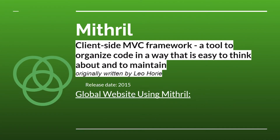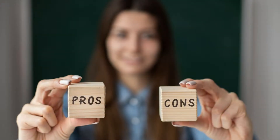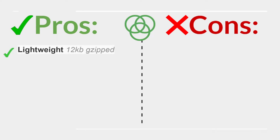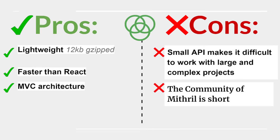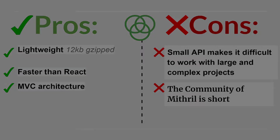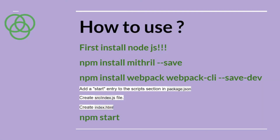Mithril is a client-side MVC framework — a tool to organize code in a way that is easy to think about and maintain. Originally written by Leo Harry, released in 2015. Used by Nike. Pros: lightweight at 12 kilobytes, faster than React, and MVC architecture. Cons: small API makes it difficult to work with large and complex projects, and a small community.